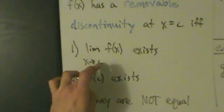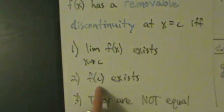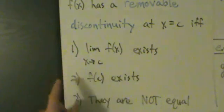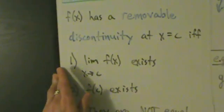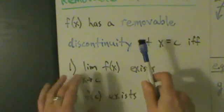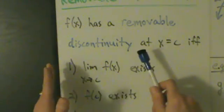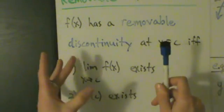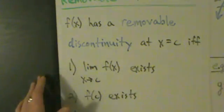So if the limit at c exists, if the function value at c exists, but if they're not equal to each other, then you have a removable discontinuity. And it's called removable because you can pretty much remove the discontinuity by redefining the function at the point of discontinuity.